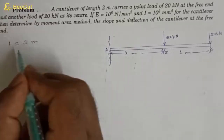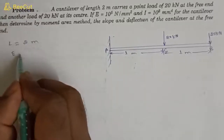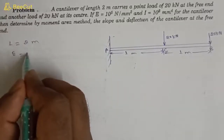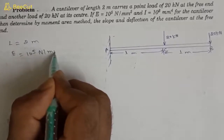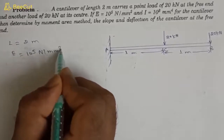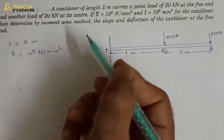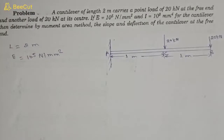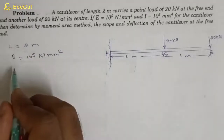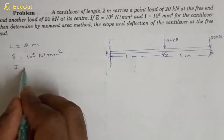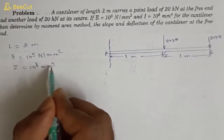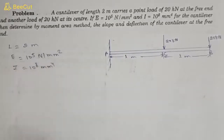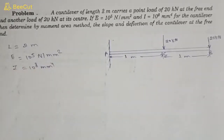The given values are: L is equal to two meters, E is equal to 10 to the power 5 Newton per mm square, and I is given as 10 to the power 8 mm to the power 4.